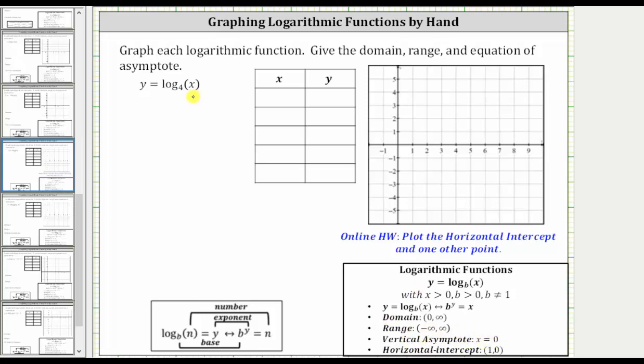The vertical asymptote is going to be x equals zero. Again, all this will be true for the given function because it fits the form of the basic log function shown here.